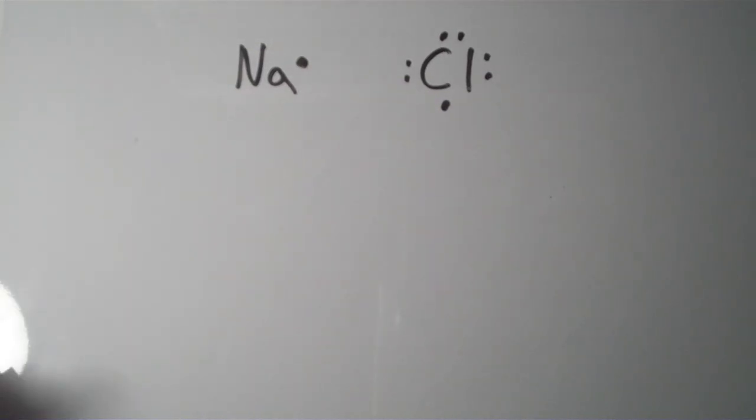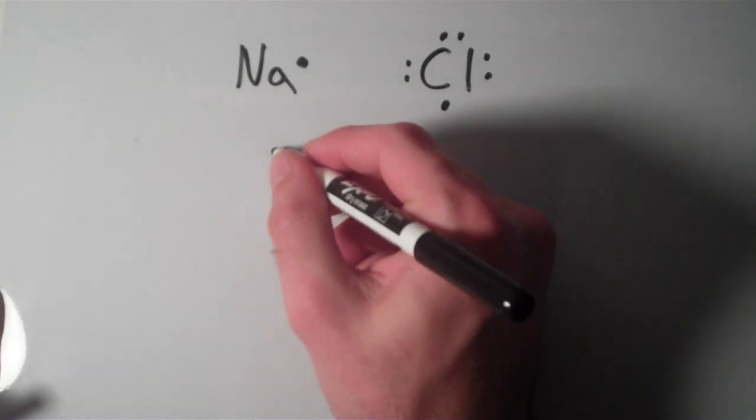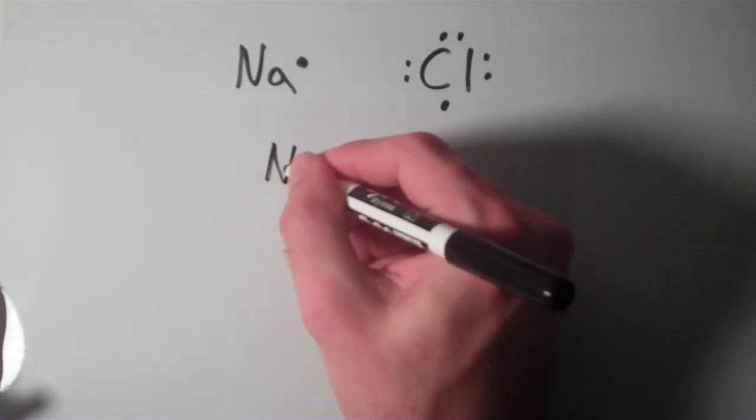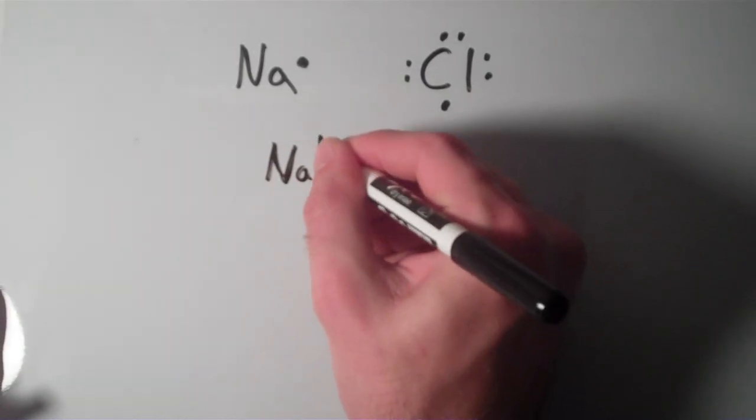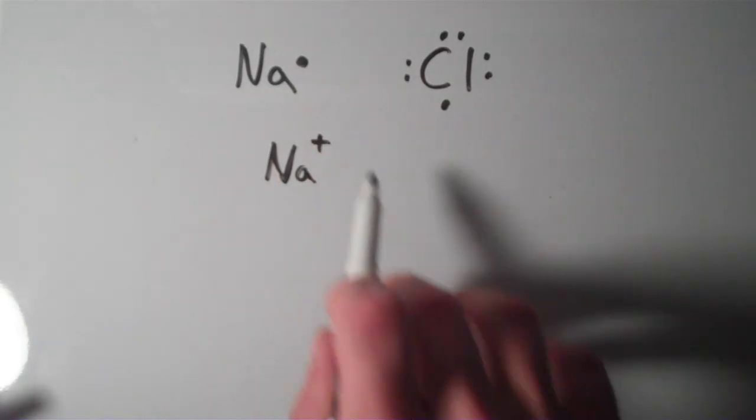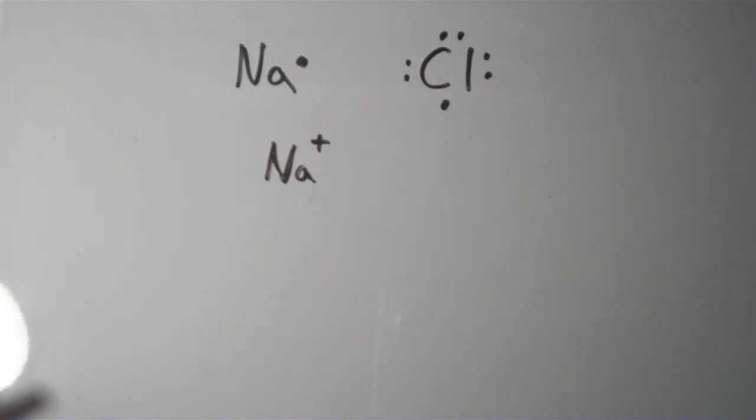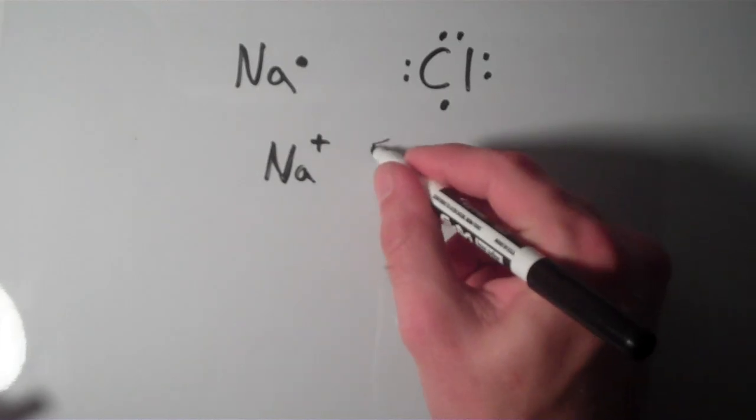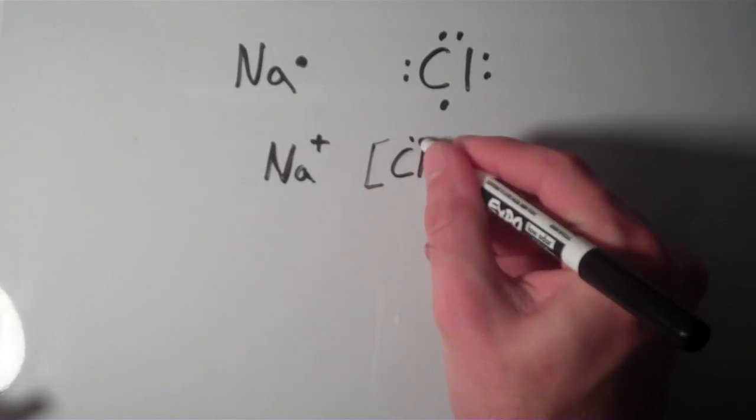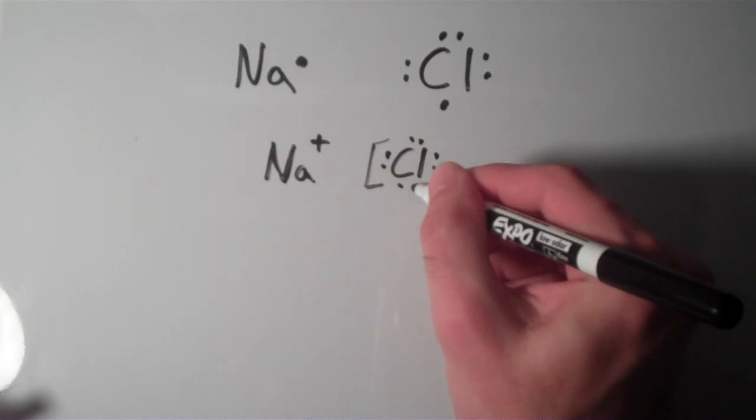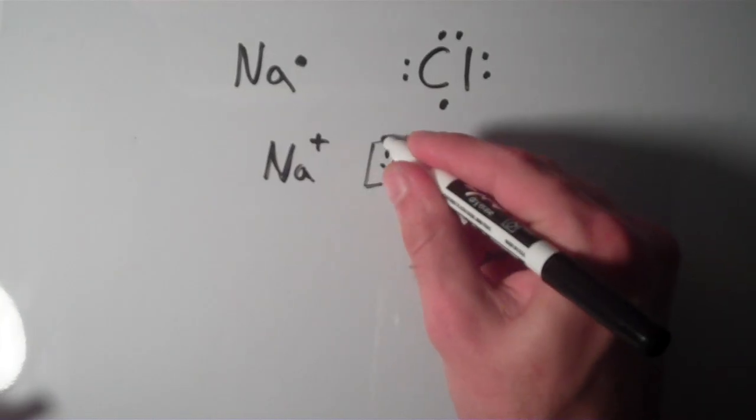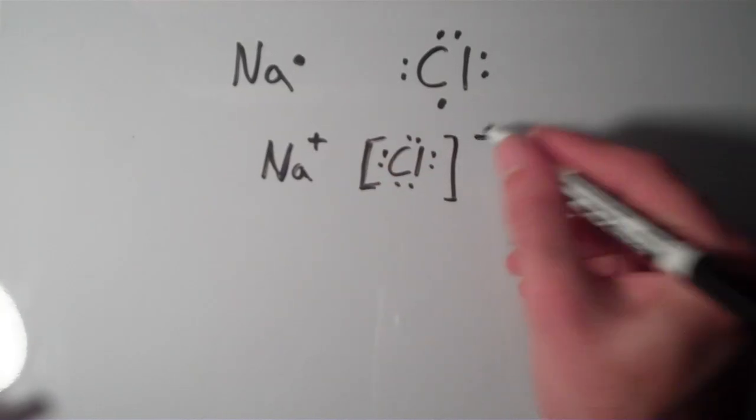So, sodium atom is now an Na+, and it has one fewer electron. And the chloride ion looks like this, and it has a negative charge.